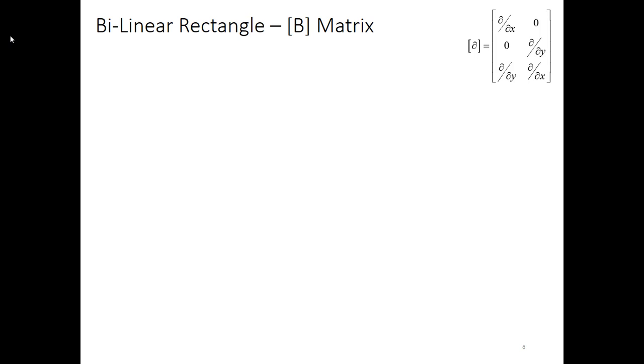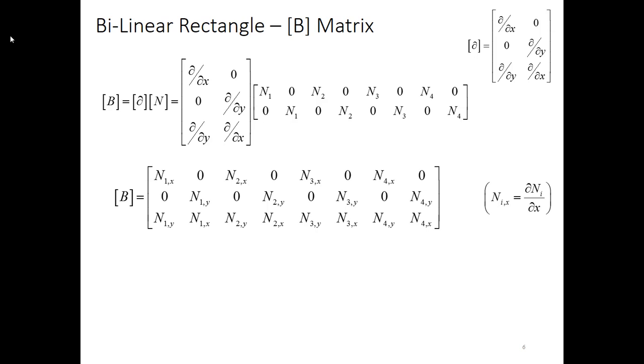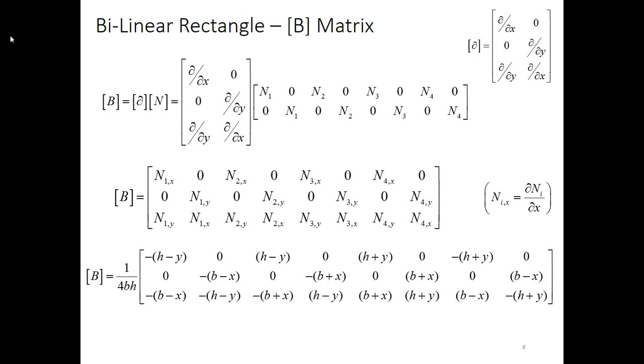Once I have the shape functions, I can go and get the B matrix. Reminded at the top there, this is our partial derivative matrix operator. The B matrix is the product of that partial derivative matrix operator acting on the shape function matrix. So the B matrix looks like this. I'm using indicial notation, so the comma x or comma y represents a partial derivative with respect to x or y. I do know those shape functions. I just developed them. So when I take these derivatives, I end up with this matrix here for B.